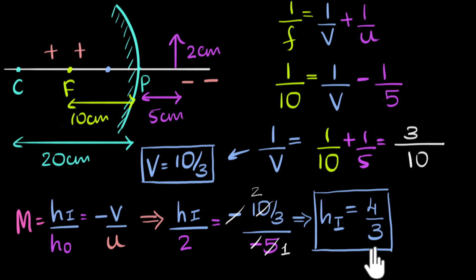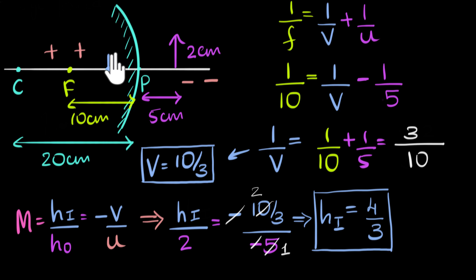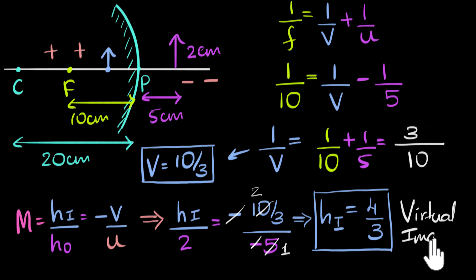We need to interpret this carefully. The height is positive, meaning the image is above the principal axis — upright. The value four over three is about 1.33, which is smaller than the object height of two centimeters, so the image is diminished. Since the image position was positive and the image is upright, it has to be virtual. If it were inverted, it would be a real image. So this is a virtual image.